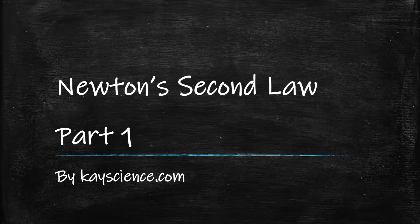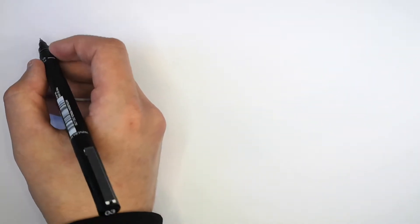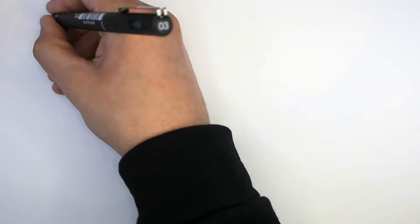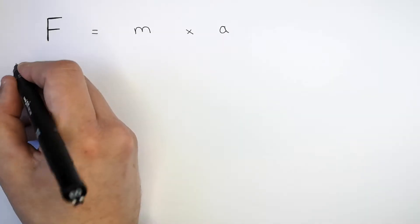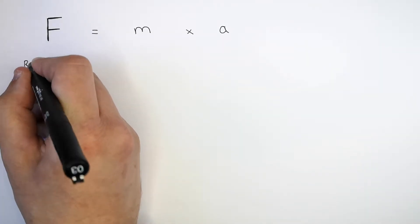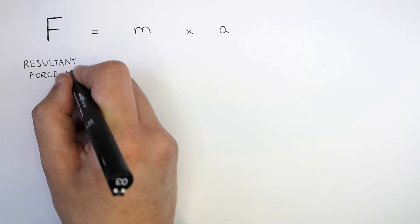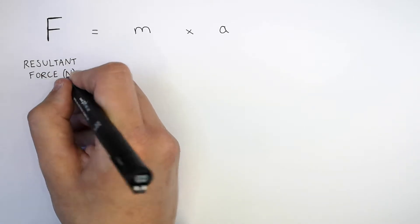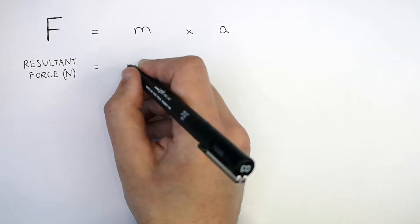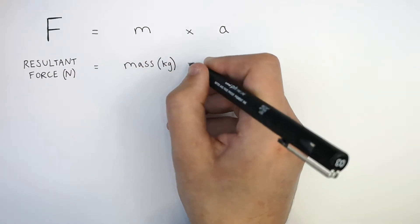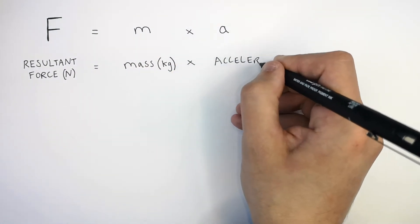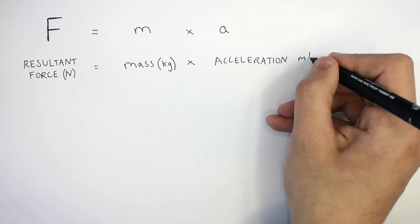Newton's second law: F equals mA. This is a very useful equation that describes Newton's second law. The F stands for the resultant force, with units of newtons. The mass is in kilograms, and the acceleration units are meters per second squared.